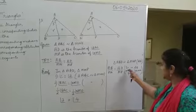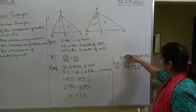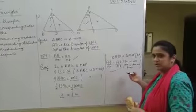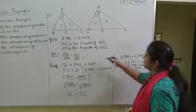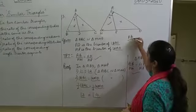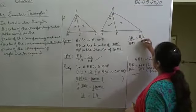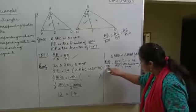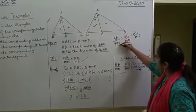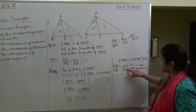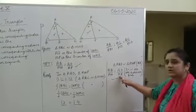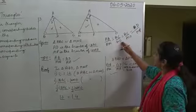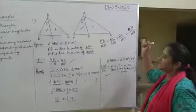In similar triangles, corresponding sides are proportional, so AB by MN equals AD by MP. We have proved this. Now, since triangles ABC and MNO are similar, we also know AB by MN equals BC by NO equals AC by MO. Since AB by MN equals AD by MP, all these ratios are also equal to AD by MP. So the ratio of the corresponding sides is the same as the ratio of the corresponding angle bisector segments.